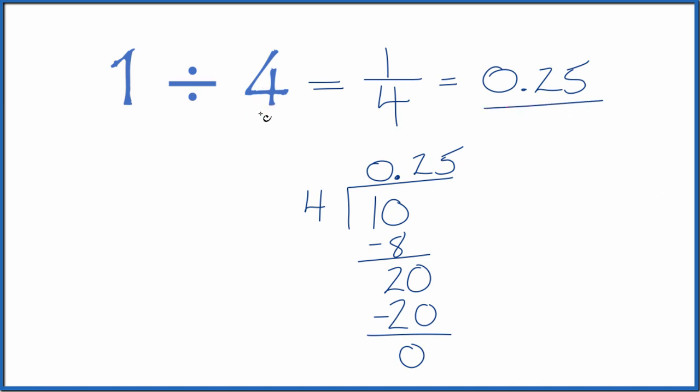This is Dr. V. Dividing 1 by 4, you get the fraction 1 fourth, or the decimal 0.25. Thanks for watching.